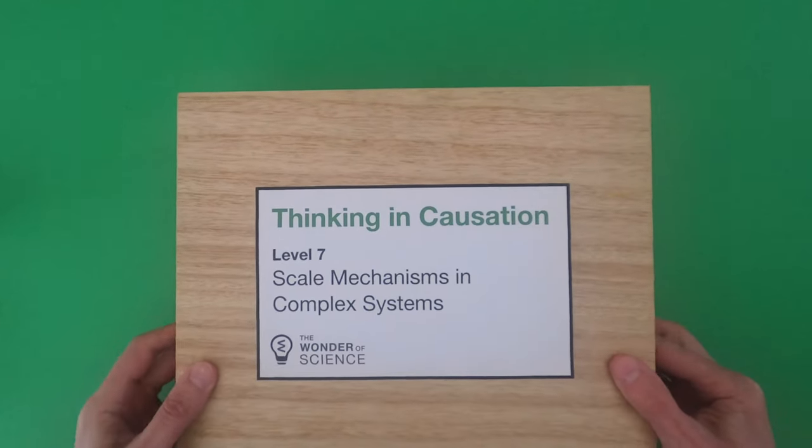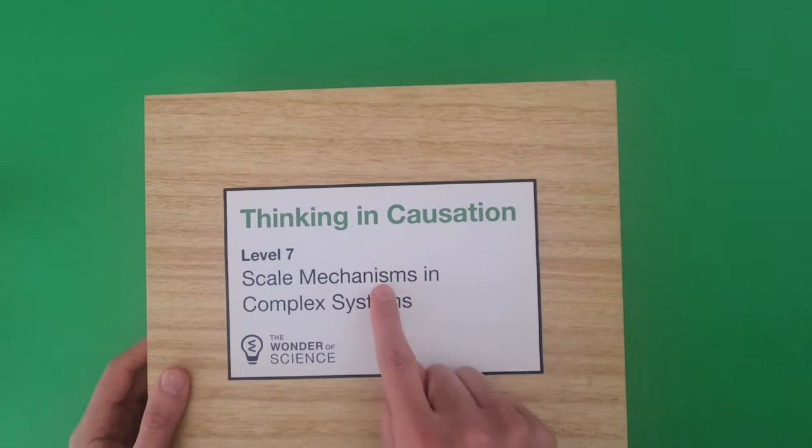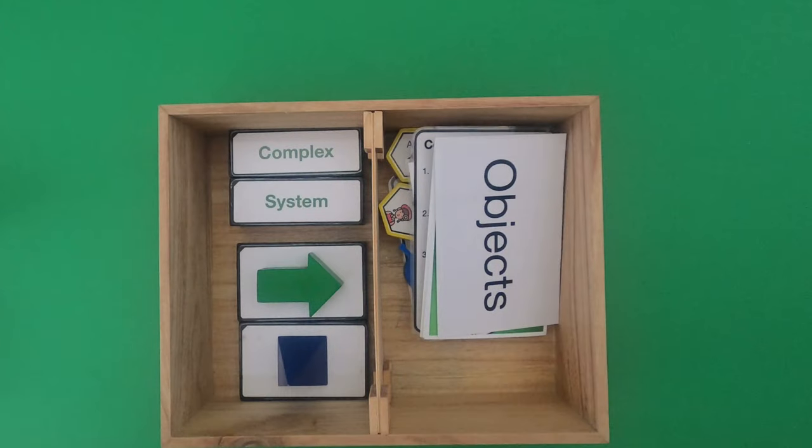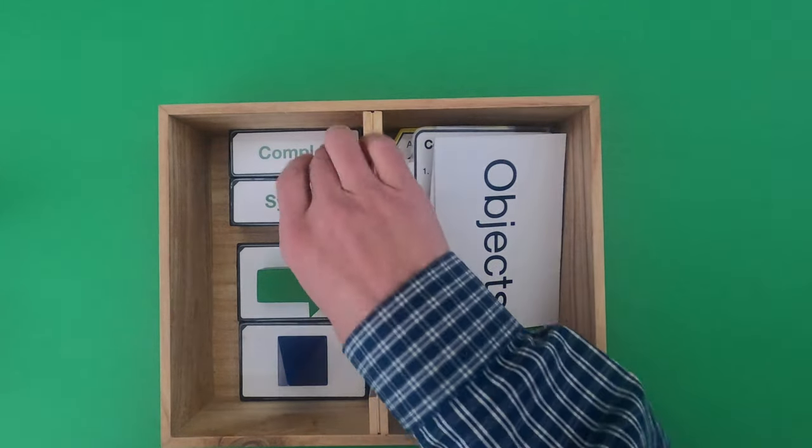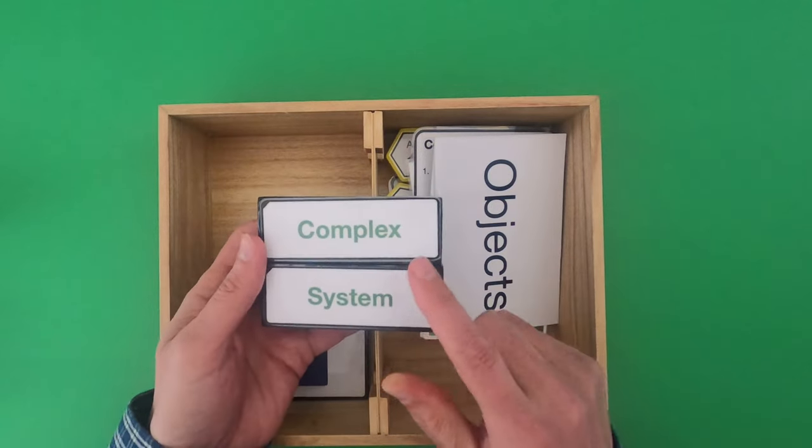Hi it's Mr. Andersen and this is Thinking in Causation level 7 scale mechanisms and complex systems. If you haven't watched the video on mechanisms you should definitely do that but what we're going to be dealing with are not simple systems but complex systems.